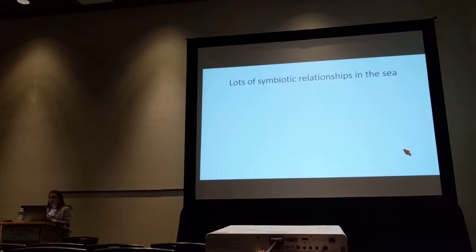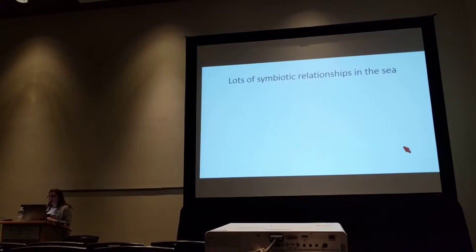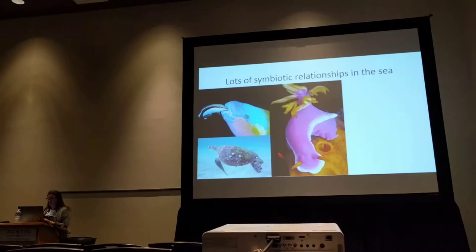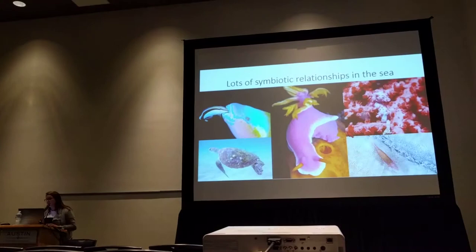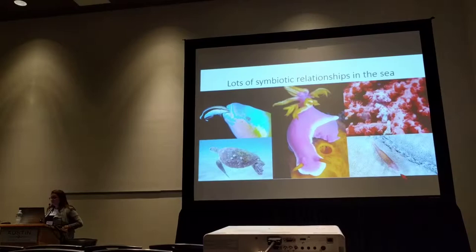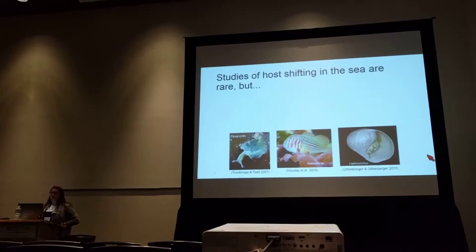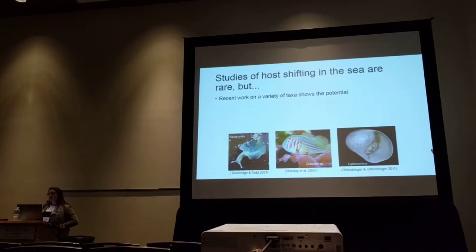There are mechanisms shown to drive ecological speciation — mainly strong interactions between species — that occur in many marine environments. Here I'm showing you a cleaner wrasse cleaning parrotfish, barnacles living on a turtle, a nudibranch that specializes on sponges, little seahorses that live on gorgonian corals, and shrimp that specialize on different species of starfish. Indeed, there are studies of host shifting in the sea, but they're rare, and they use traditional phylogenetic methods.